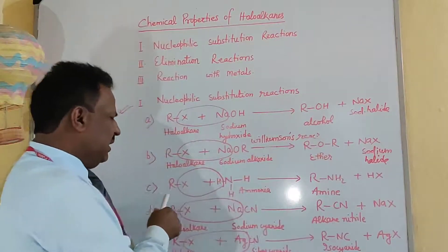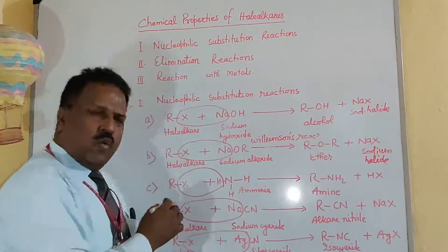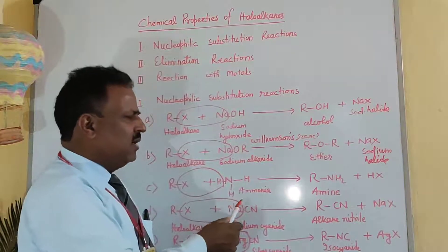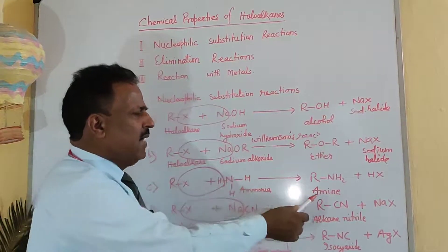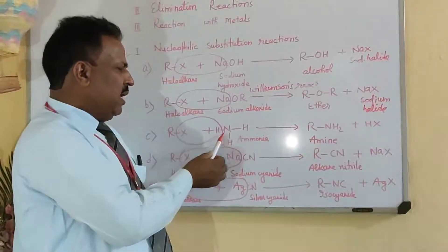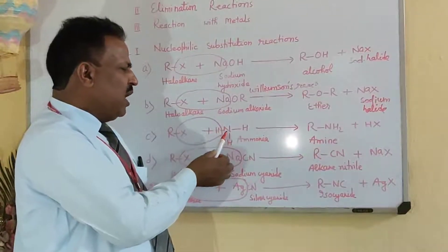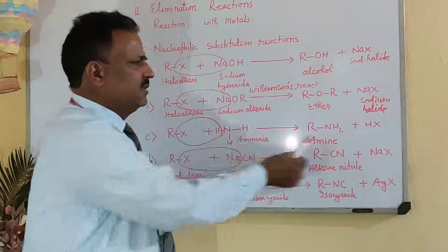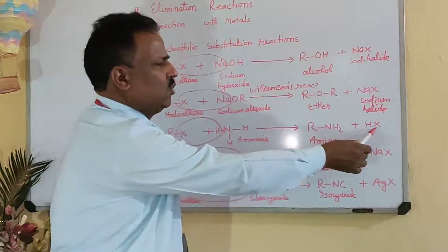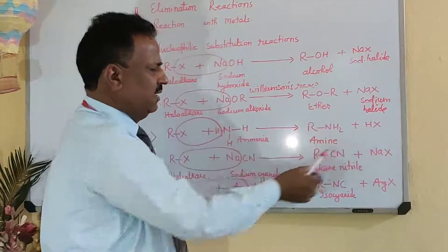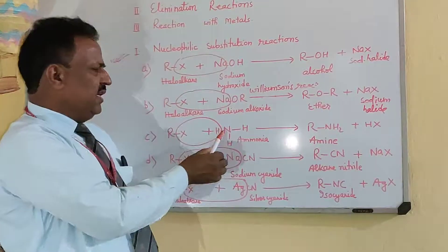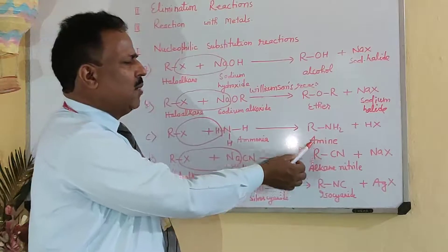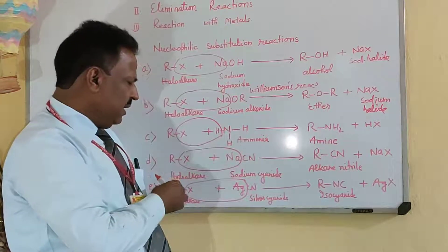C. When RX reacts with ammonia (NH3), an amine is formed. Hydrogen and X combine to form hydrogen halide as a byproduct, and R combines with NH₂ to form an amine.